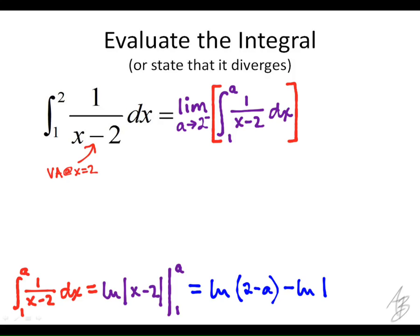So plugging those in, notice that I switched the order here. And I really only had to worry about it for the a. When I do a minus 2, again, that's going to be a negative. So to get rid of the absolute value, I'm just going to write it as 2 minus a. So I have the natural log of 2 minus a here, and then minus the natural log of 1 here.